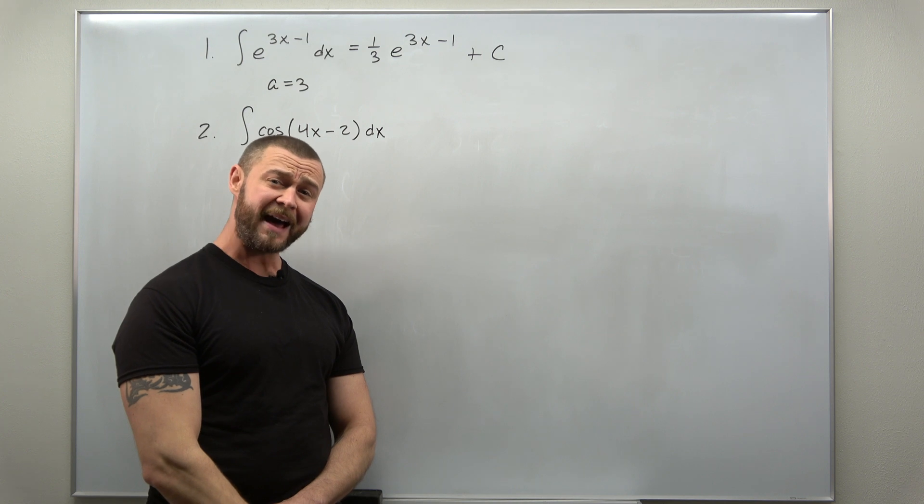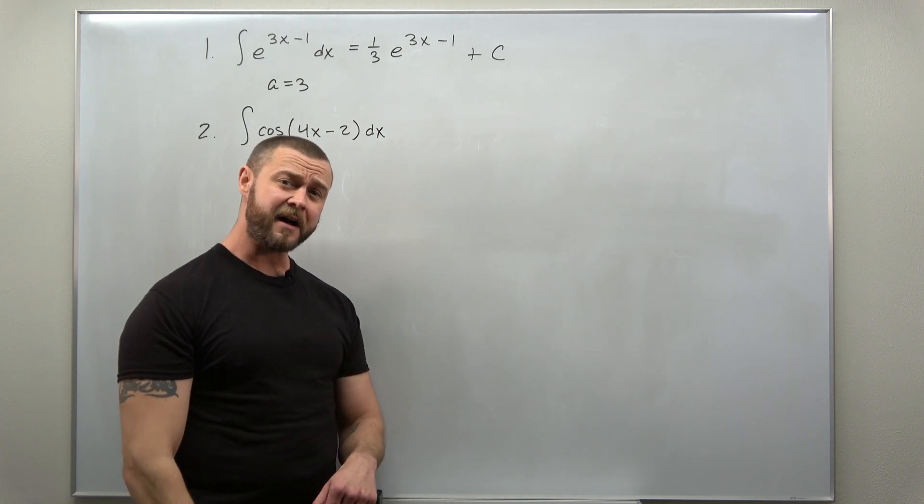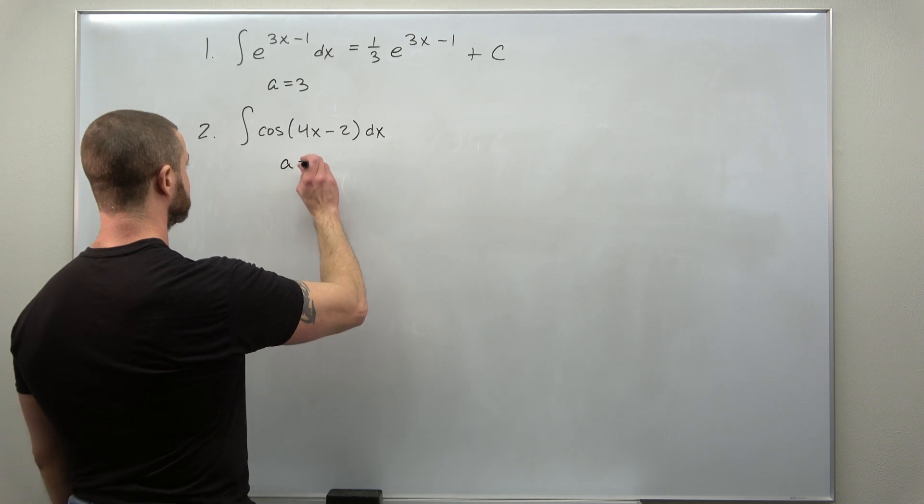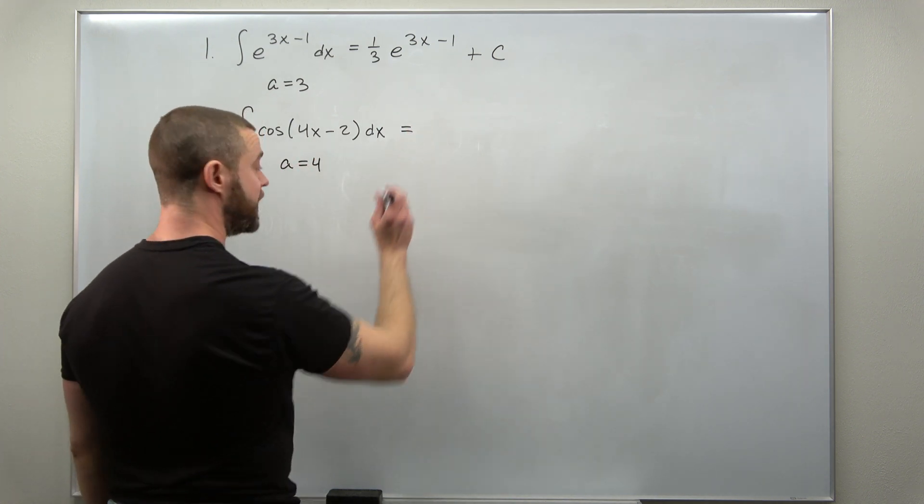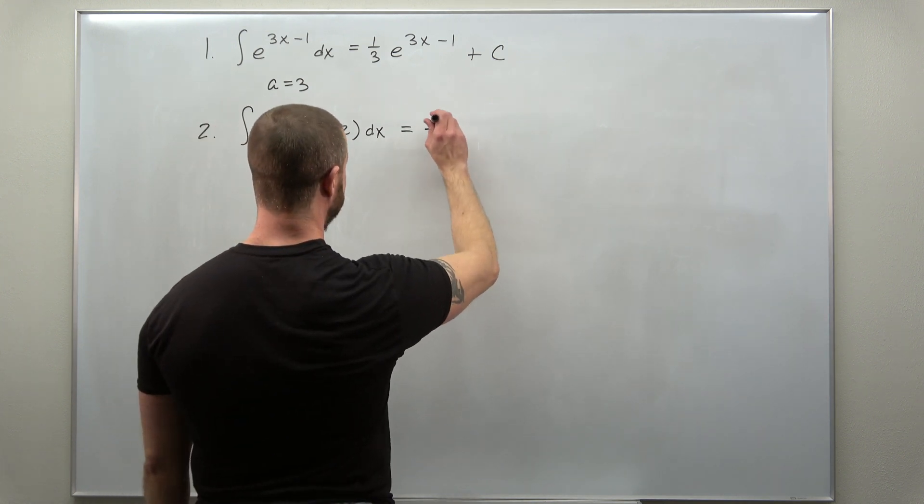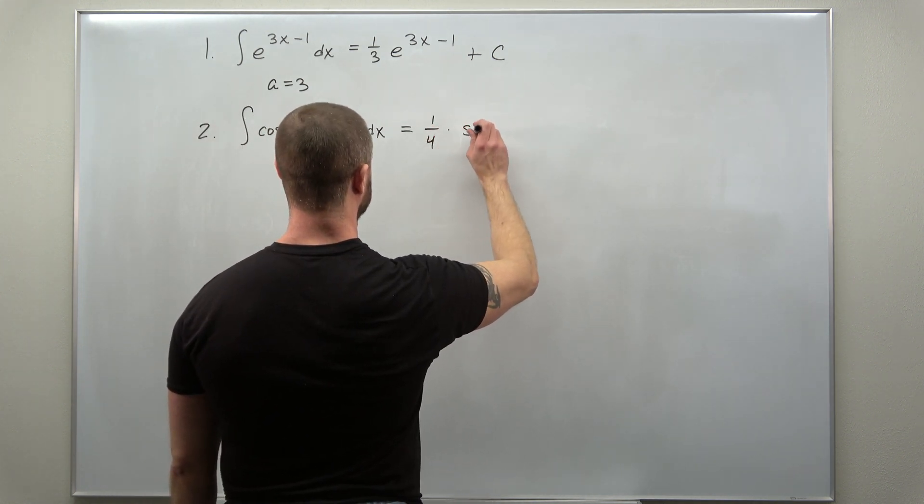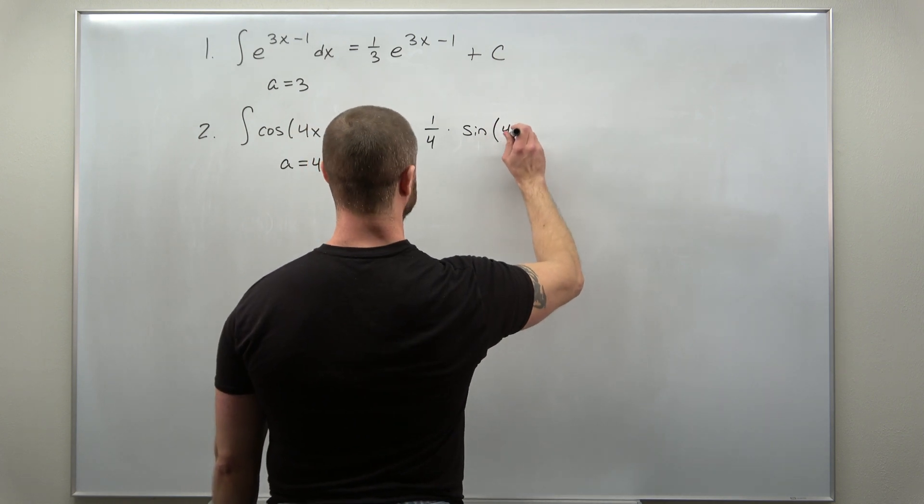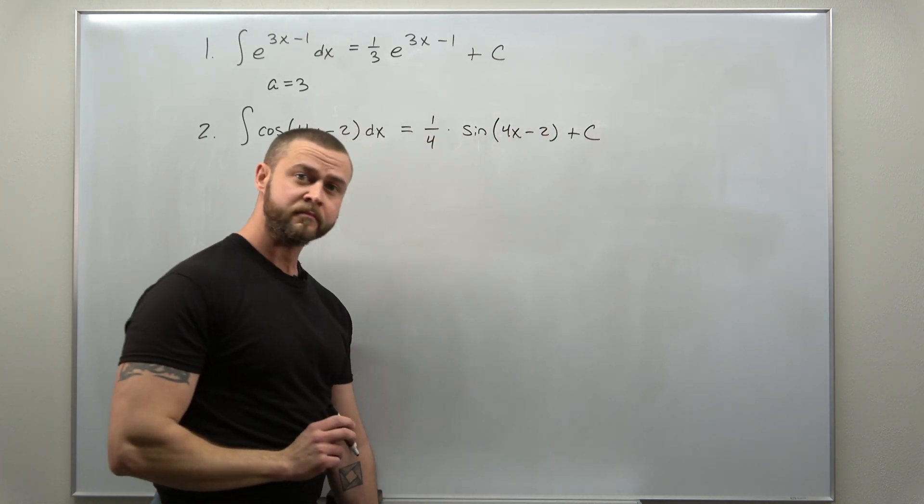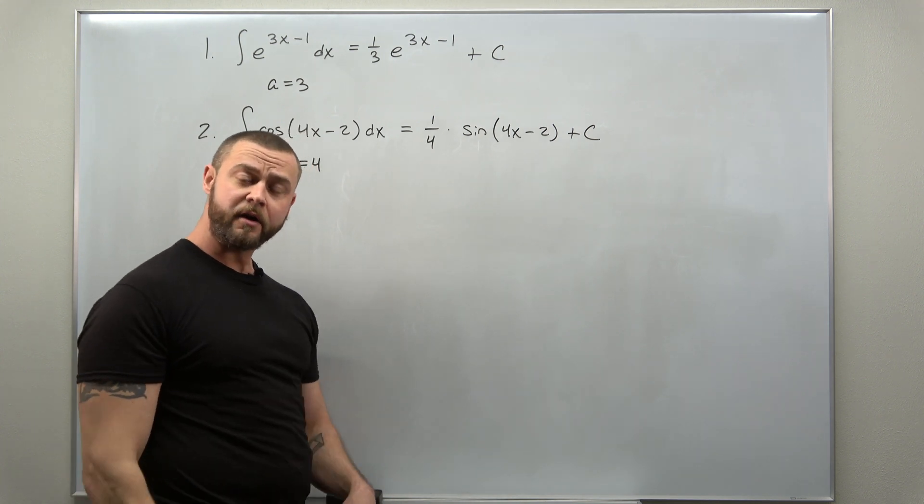You can probably start to see the pattern here. We identify the value of a which is here 4 and our antiderivative gives us a 1 over a, 1 over 4 factor times the basic antiderivative. All right, let's take a look at another one.